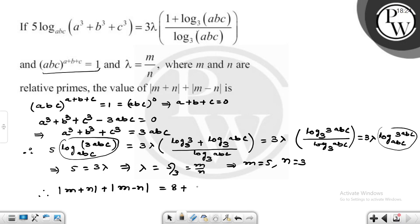Therefore, |m + n| + |m - n| equals 8. This is the answer.